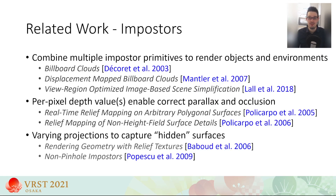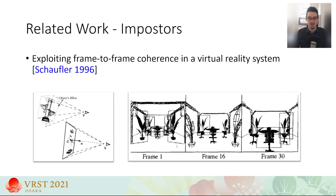Over the years, a number of different impostor techniques have been explored. The majority relies on a pre-computed representation which aims at completely replacing the original object. Our approach, on the other hand, dynamically recreates impostors at runtime. This allows us to better handle dynamic aspects of the scene, such as changes in lighting or geometry. Most similar to our work is the technique of Schaufler, who also presented a rendering system which relies heavily on dynamically generated impostors. We follow the same core principle of reusing previously rendered images of objects, but we extend this idea to be applicable to modern XR applications.